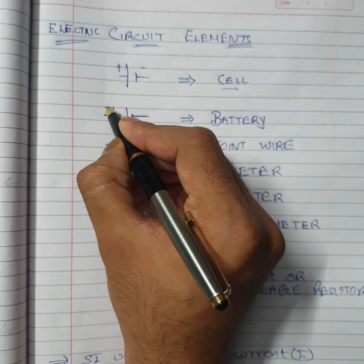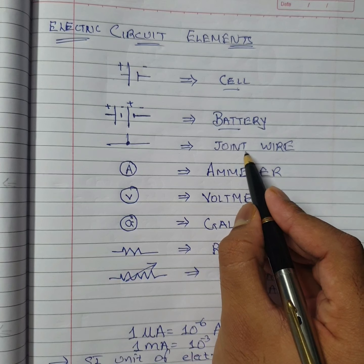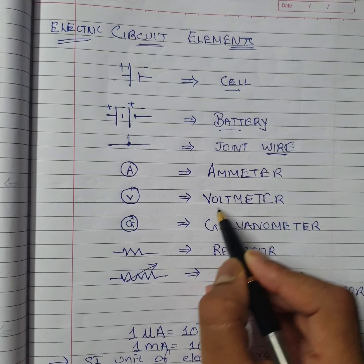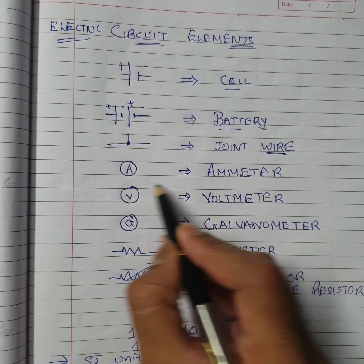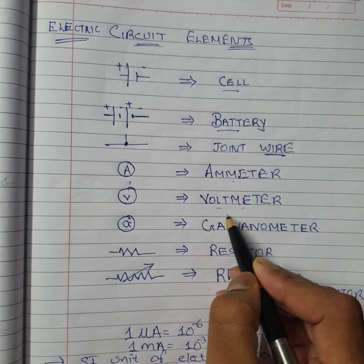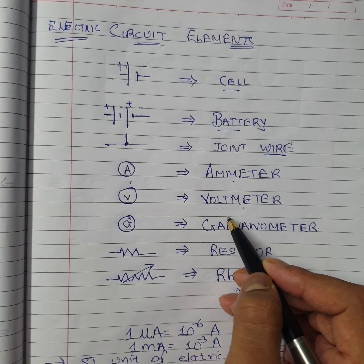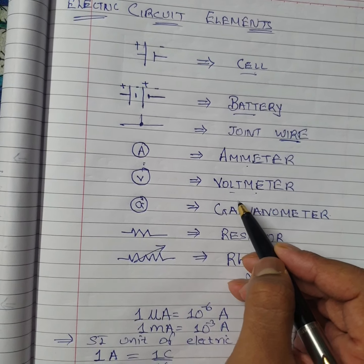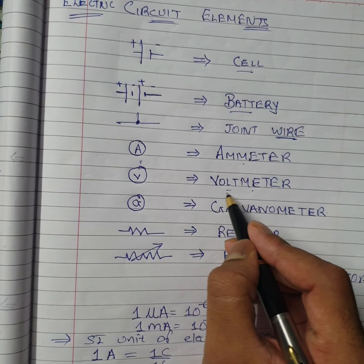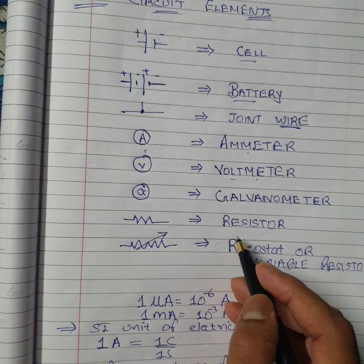To connect components in a circuit we need wire, which can be joined or separate. An ammeter is used to measure current. A voltmeter measures potential difference, which is responsible for generating current — it is the difference that drives charge to flow from one end to another. A galvanometer is also present in circuits.